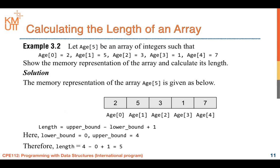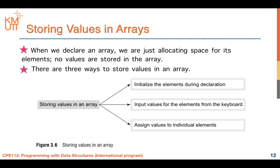For an array of five integers, the upper bound is four and the lower bound is zero. Applying the formula: four minus zero plus one gives five, confirming we have five elements. This is how to calculate the size of an array.